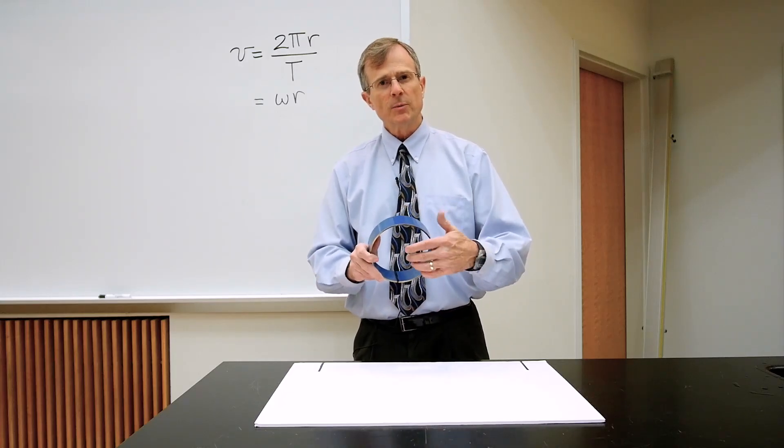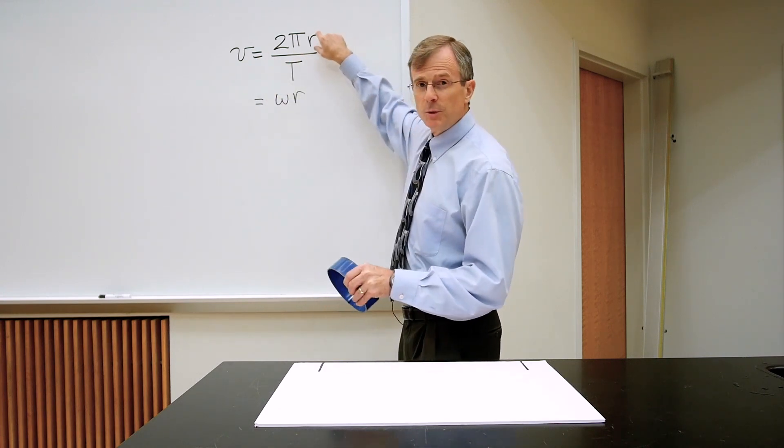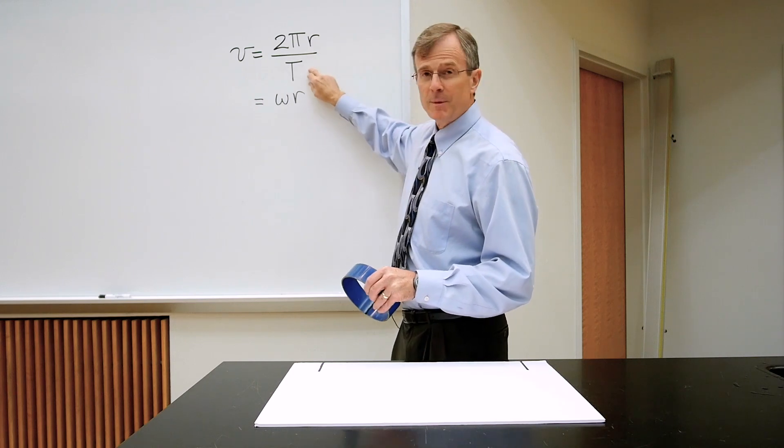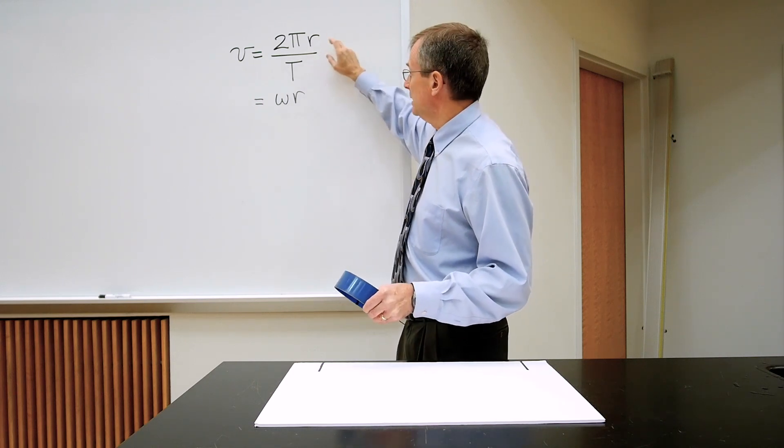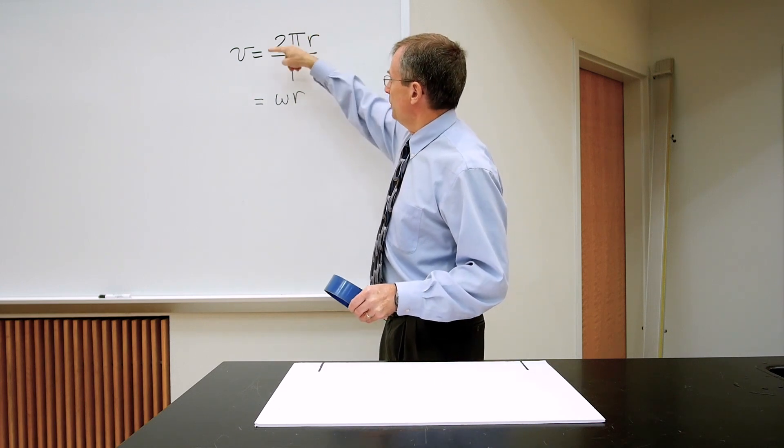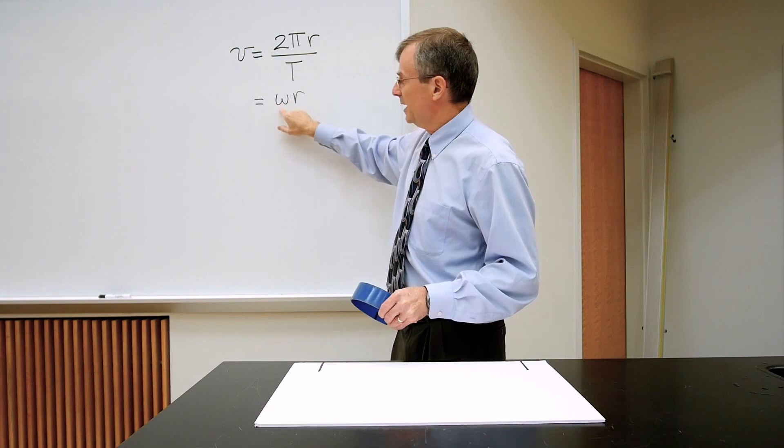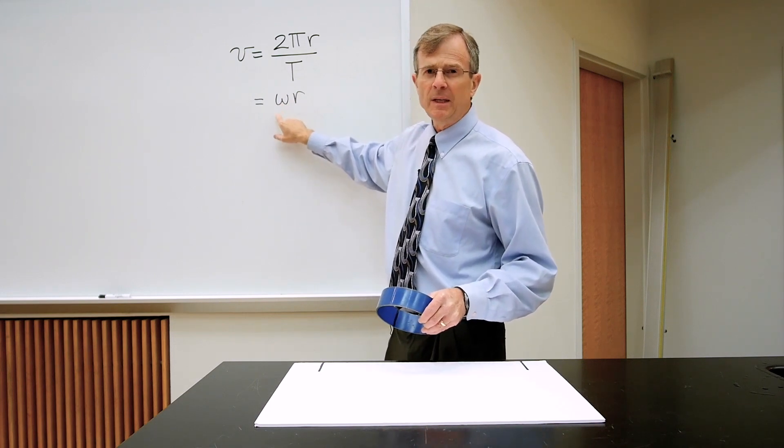So that distance is the circumference of the circle, and that's 2 pi times the radius of the circle. So the distance that I've gone is 2 pi times the radius, that's the circumference, divided by the time. That's what we mean by velocity - distance divided by time. But 2 pi divided by the period T is defined as the angular speed omega.